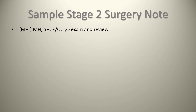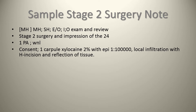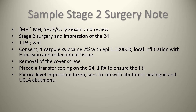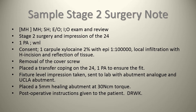A sample stage two surgery note: review medical history, social history, extra-oral and intra-oral exam. Stage two surgery and impression of upper left first premolar. A periapical radiograph was taken — normal, no signs of bone loss or infection, implant appears integrated radiographically. Consent obtained. One carpule of xylocaine 2% with epinephrine 1:100,000 given via local infiltration. H incision to uncover implant, tissue reflected, cover screw removed. Transfer coping placed, PA taken to confirm fit. Fixture-level impression taken, sent to lab with fixture analog and UCLA abutment. A 5 mm healing abutment placed at 30 Ncm torque. Post-op instructions given.